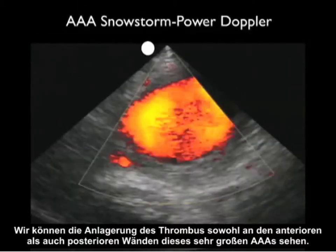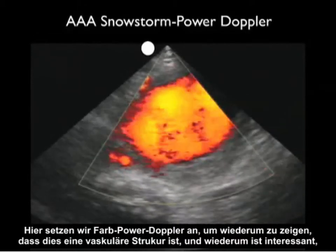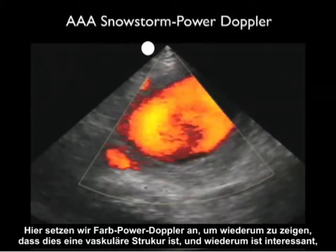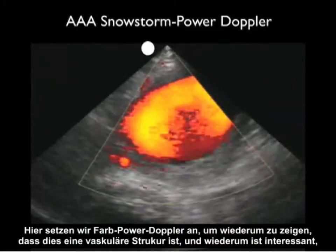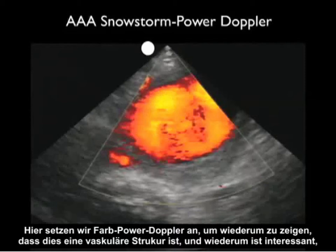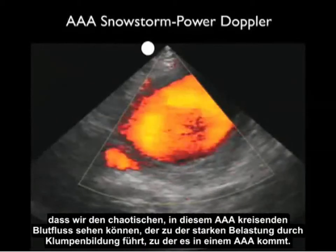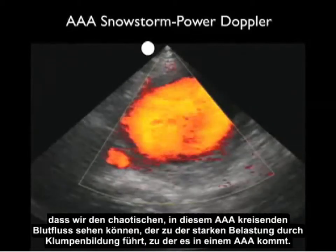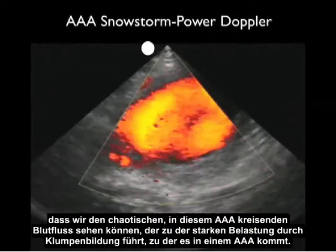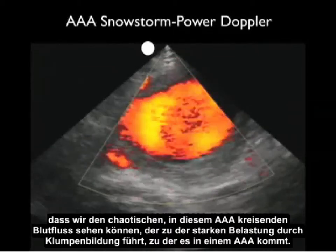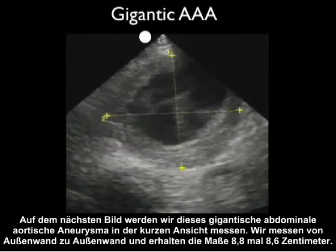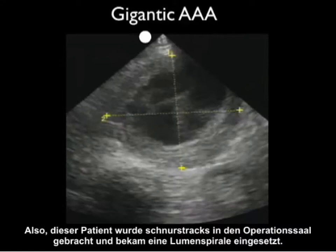Here we're putting color power Doppler down to show that this is a vascular structure, and we can see the chaotic flow of blood round and round within this AAA that contributes to the substantial burden of clot formation. Measuring this gigantic abdominal aortic aneurysm in the short axis orientation from outer wall to outer wall, we get a measurement of 8.8 by 8.6 centimeters. This patient went directly to the operating room and had successful placement of a stent.